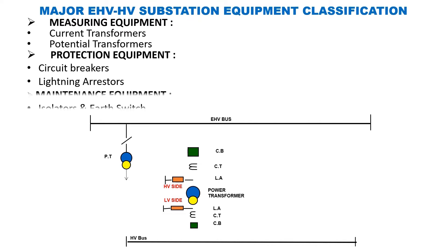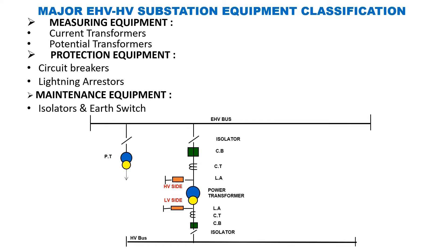At last are the maintenance equipment such as isolators and earth switches. They are placed in the single line diagram as shown here, which completes the SLD of transformer bay TR1.